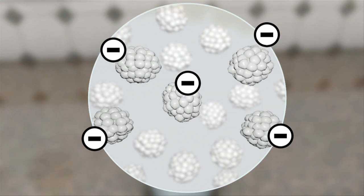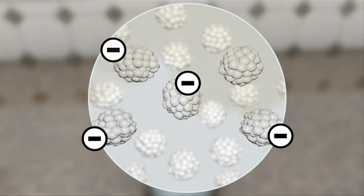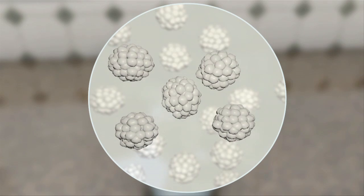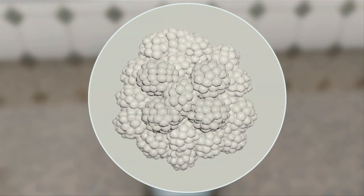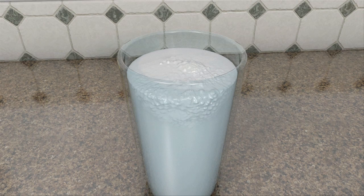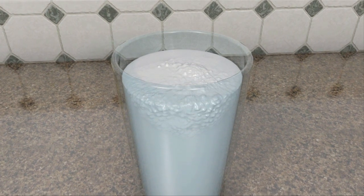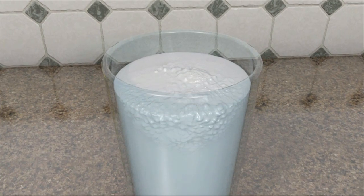If milk is acidified, either by adding an acid or by bacterial fermentation, the negative charges neutralize and the casein proteins come together and coagulate into lumps. This is the reason old milk curdles. The emulsion of casein proteins in water is broken.